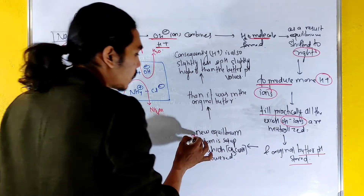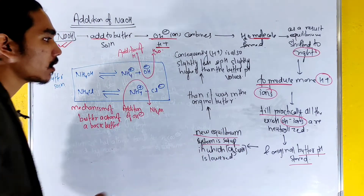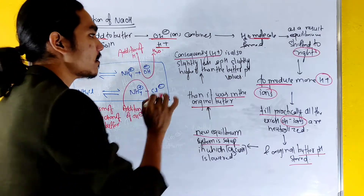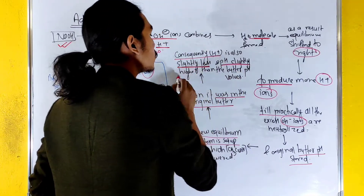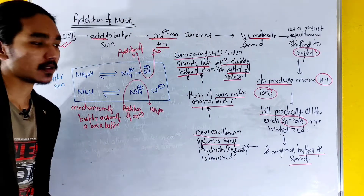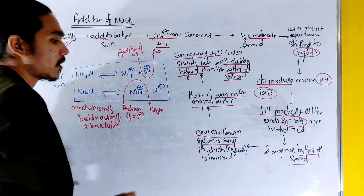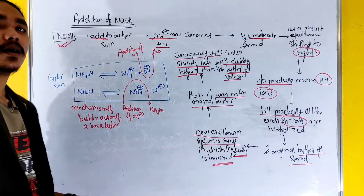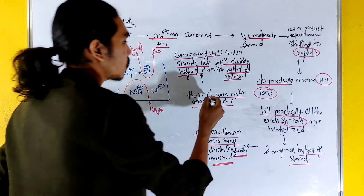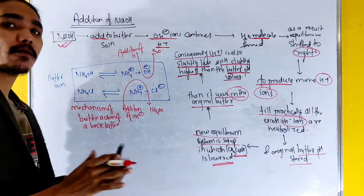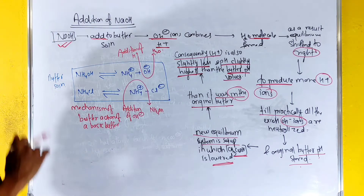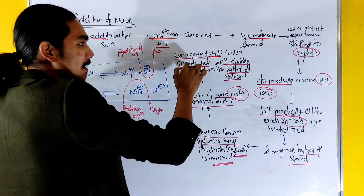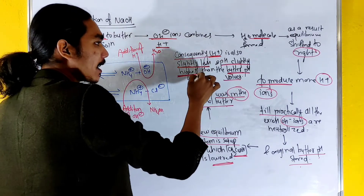In the new equilibrium system, CH3COOH is lower than it was in the original buffer. Consequently, H+ is slightly lower than in the original buffer, meaning the pH is slightly higher than before.